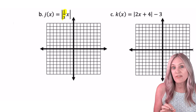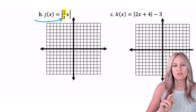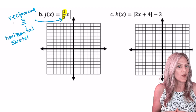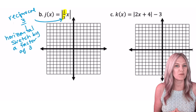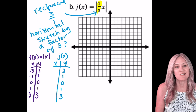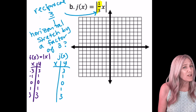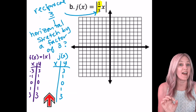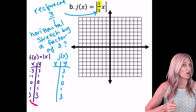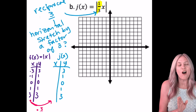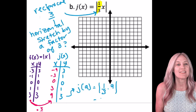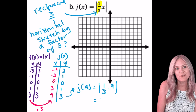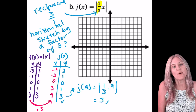Looking at j of x equals the absolute value of one-third x, the one-third is inside with the x. The reciprocal of one-third is 3. So I think we're going to have a horizontal stretch by a factor of 3. I'll keep the y values from the parent function and multiply all input values by 3. Verifying j of 9: absolute value of one-third times 9 is absolute value of 3, which is 3. It works.